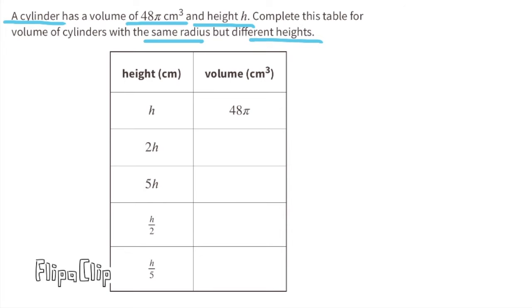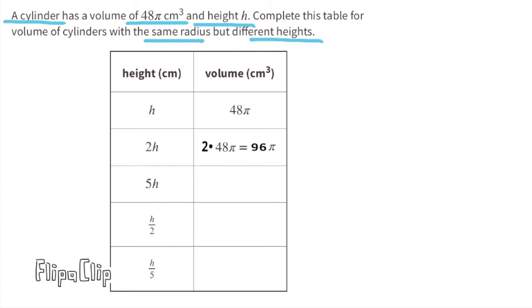Two h, or two centimeters, would be double one h, so the volume is going to be doubled. 2 times 48π equals 96π. This cylinder that's two centimeters in height has a volume of 96π centimeters cubed. The next cylinder has a height of 5h, or 5 centimeters — that's 5 times taller than the first cylinder. So we'll multiply 5 times 48π, and that equals 240π. Its volume is 240π centimeters cubed.